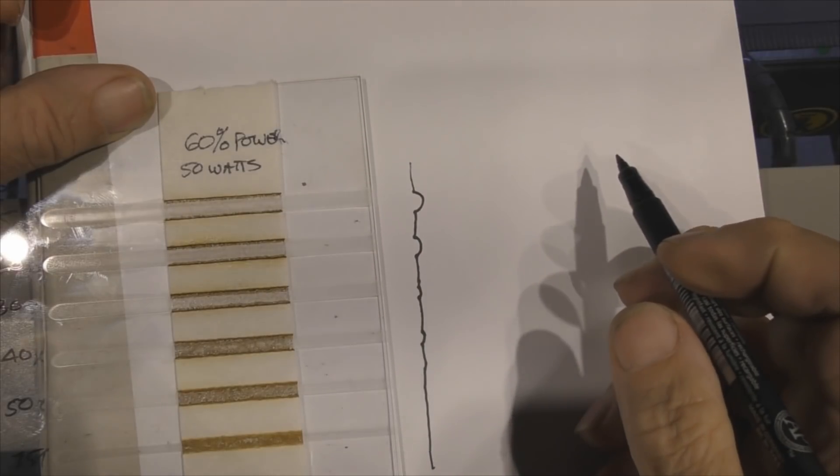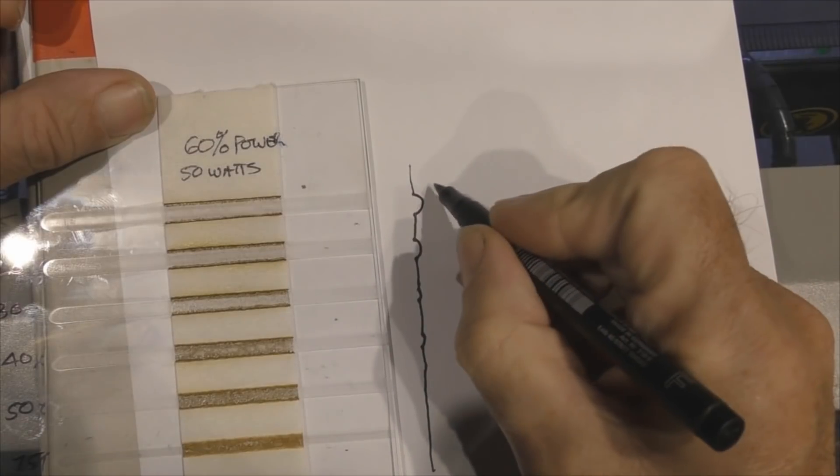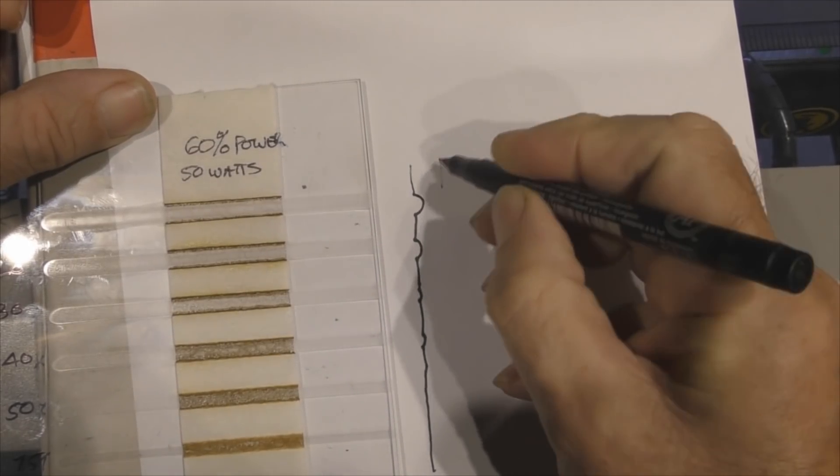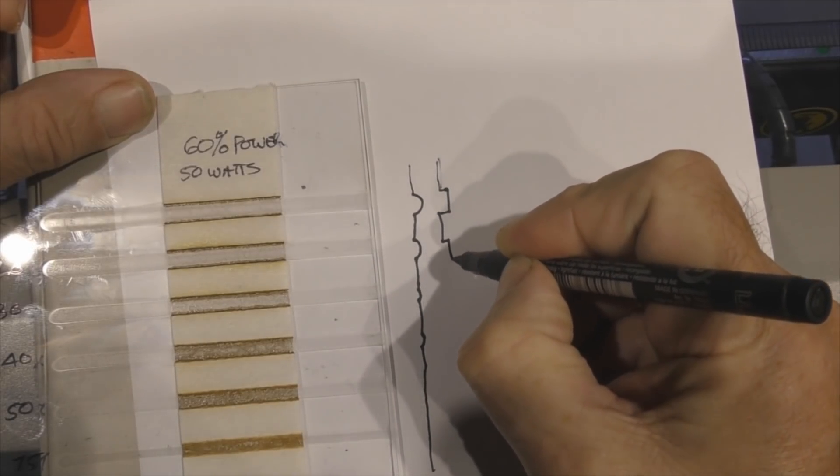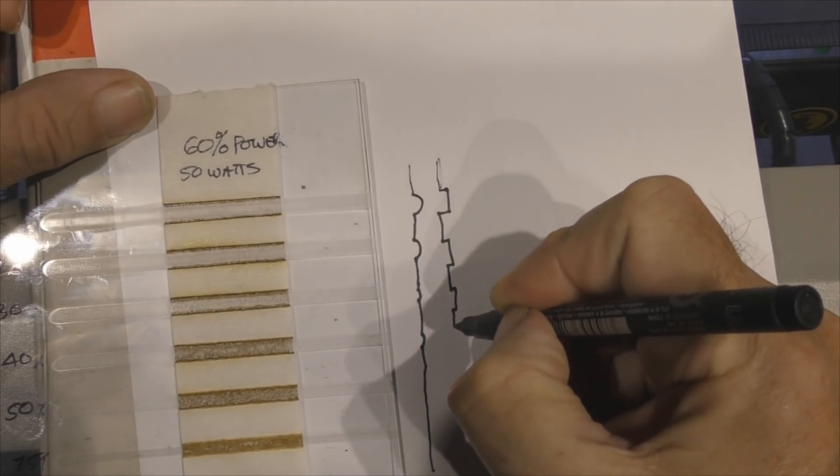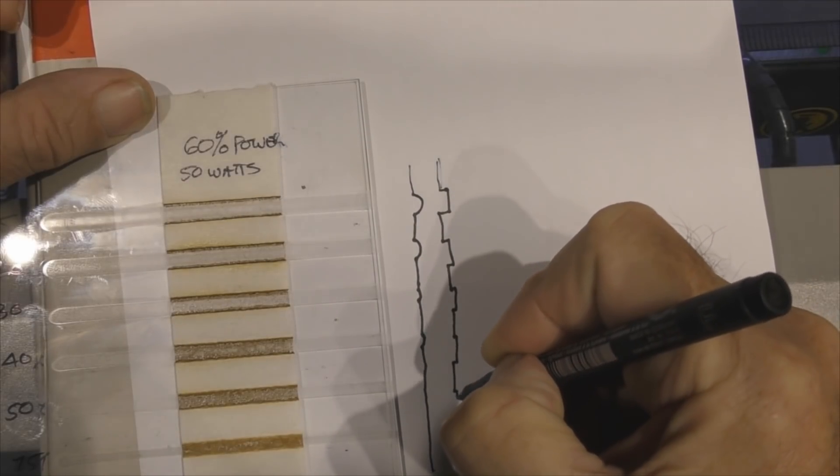Now, the question is, why are these lines changing shape? We've got the same power, so you could possibly imagine that the beam would look like this and it would cut grooves in, maybe different depths, but that they would be the same width grooves all the way down.